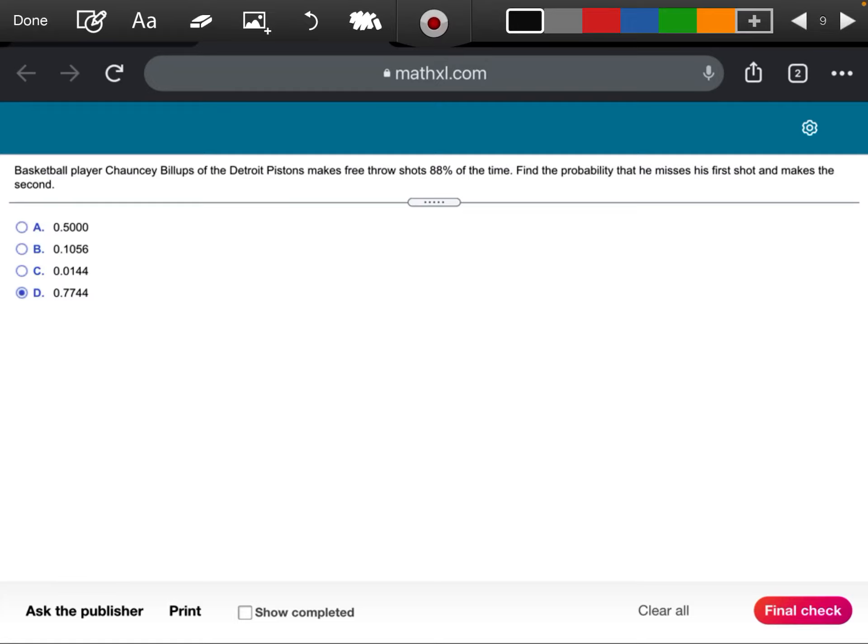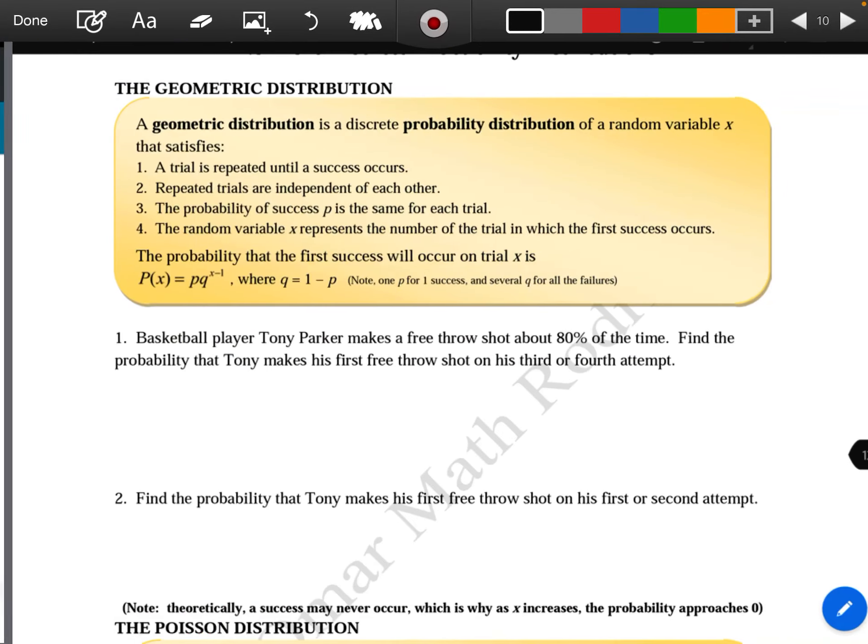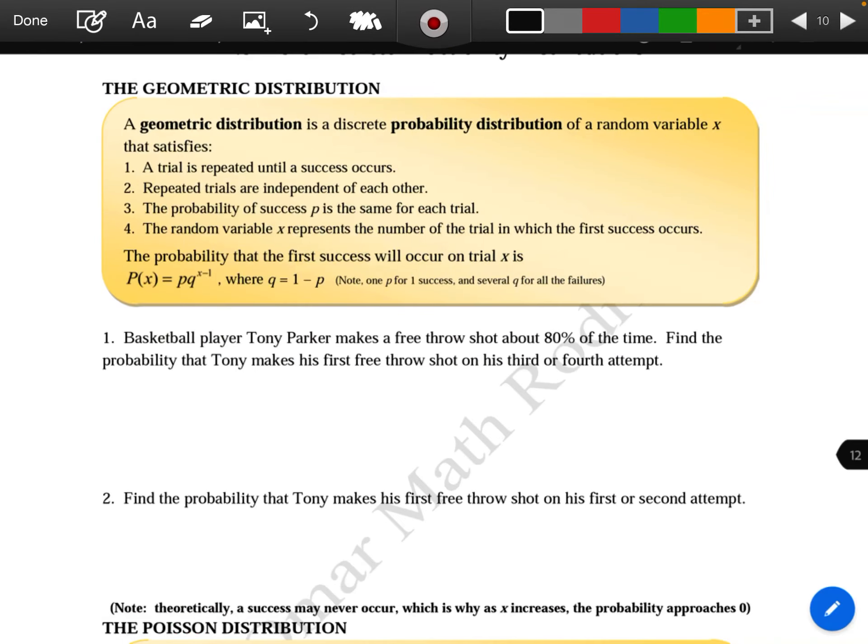Alright, so this is a problem from the review. It says basketball player Chauncey Billups of the Detroit Pistons makes free throw shots 88 percent of the time. Find the probability that he misses the first shot and makes the second.